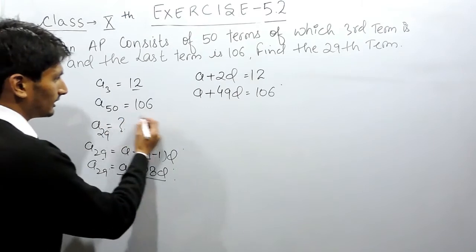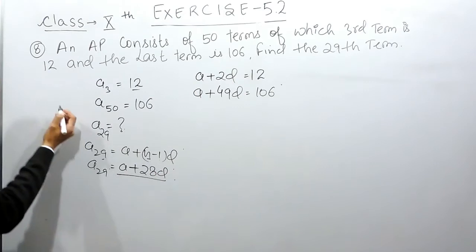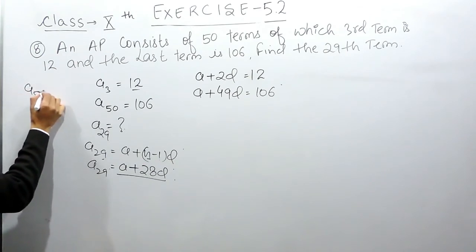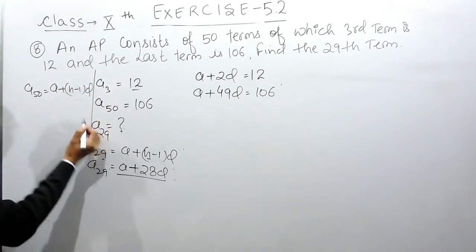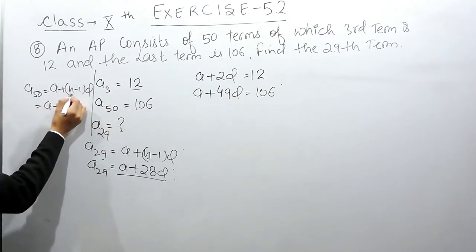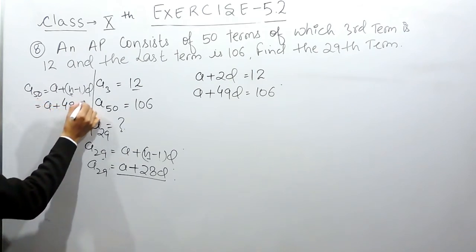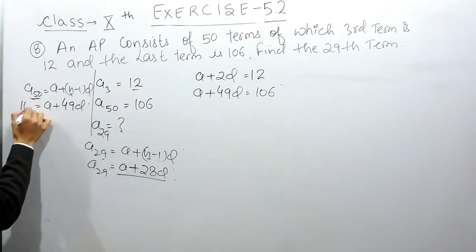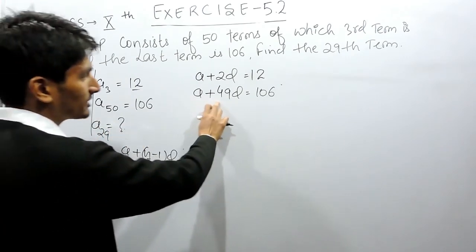The same formula is again applied here. If you are not able to figure out how I have solved this directly, I am solving again for you. The 50th term will be A + (N-1)D, and A is A, and the term is 50, so 50 minus 1 is 49D. And the 50th term which is the last term is given to you as 106. So this is how I can conclude that the last term must be A + 49D.